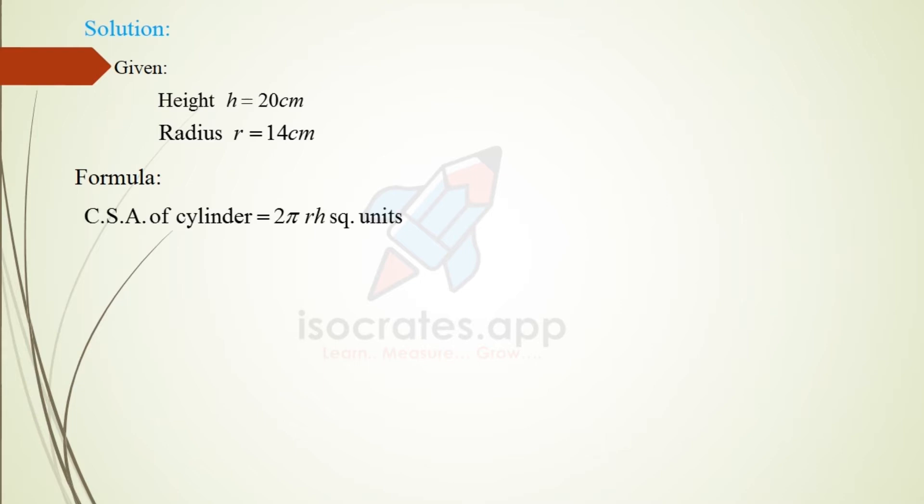2πrh square units. Total surface area of the cylinder, the formula: 2πr(h + r) square units.